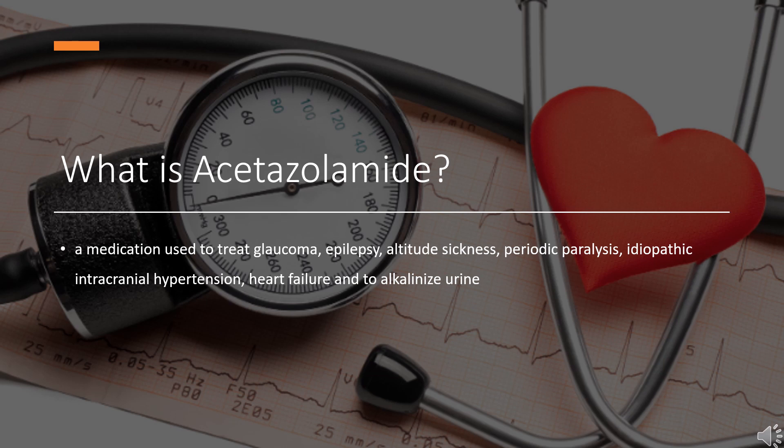Acetazolamide, sold under the trade name Diamox among others, is a medication used to treat glaucoma, epilepsy, altitude sickness, periodic paralysis, idiopathic intracranial hypertension, heart failure, and to alkalinize urine. Acetazolamide came into medical use in 1952. It is on the World Health Organization's list of essential medicines and is available as a generic medication.